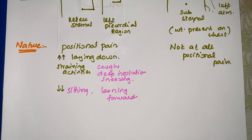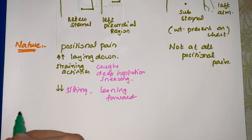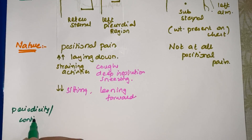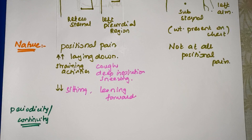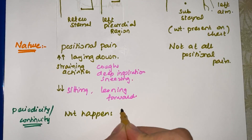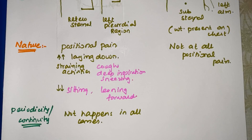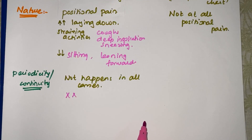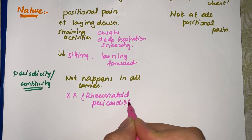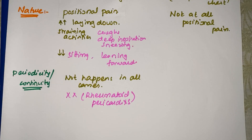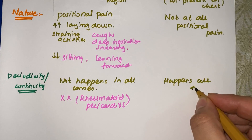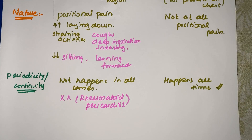The next point is the continuity of pain. Acute pericarditis pain does not happen all the time in all cases — for example, it does not occur in patients with rheumatoid pericarditis. In myocardial infarction, however, pain happens all the time and is present in almost all cases of MI.